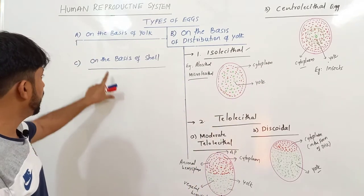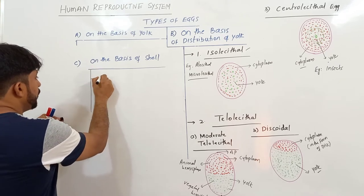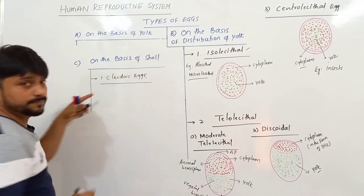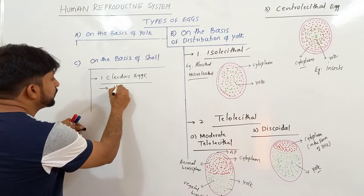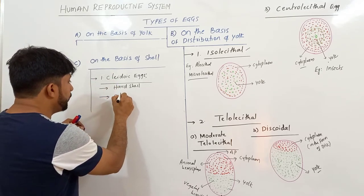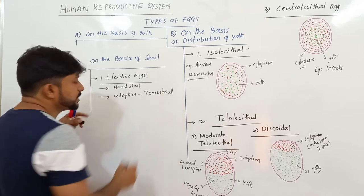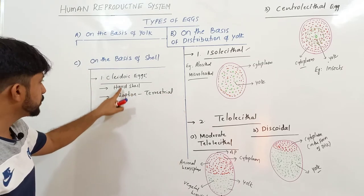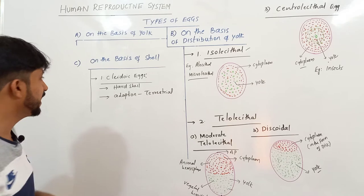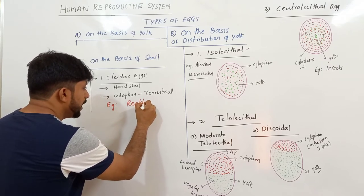Eggs are also classified on the basis of shell presence and absence. If the shell is present, such eggs are called Cleidoic eggs. In Cleidoic eggs, they are covered by a hard shell. These eggs have an adaptation for terrestrial mode of development — the hard shell protects from desiccation. Such Cleidoic eggs are found in reptiles and birds.